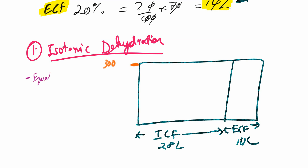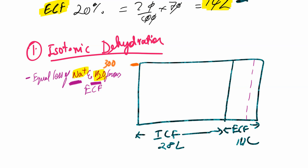In isotonic dehydration, there is equal loss of both sodium and water from the extracellular fluid. Because of this equal loss, there is shrinkage of the extracellular fluid. However, because sodium and water are lost equally, the extracellular fluid compartment remains isotonic despite the loss. Since the extracellular fluid compartment is isotonic, there is no net movement of water from the intracellular to the extracellular fluid compartment.